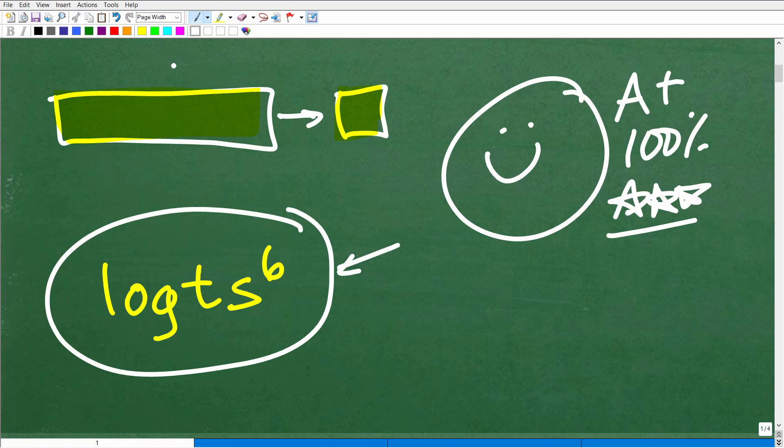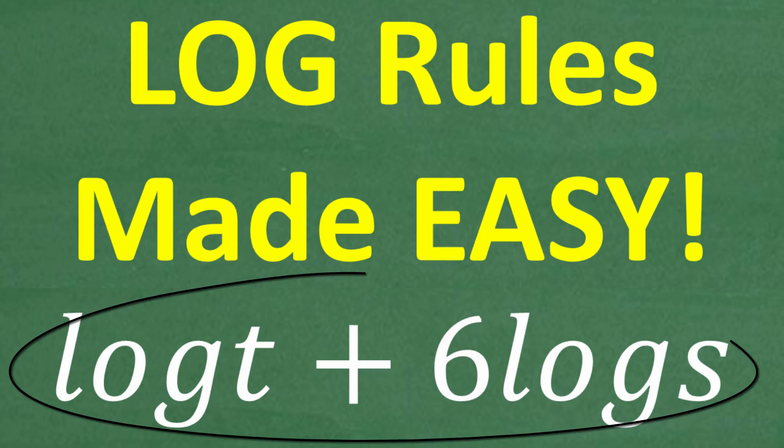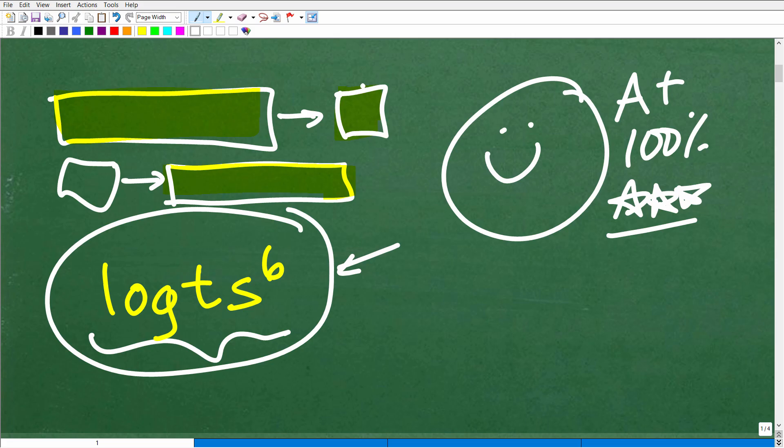Now, not all textbooks or teachers will refer to it that way, but that's a pretty common term. The reverse is when we have a single log expression, we can do the reverse of condensing, which is referred to as expanding. So basically, in order to go from one expression to another, a big to a small or a small to a big, you're going to need to know the properties of logarithms.